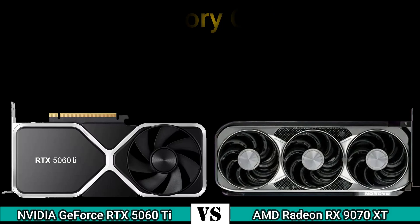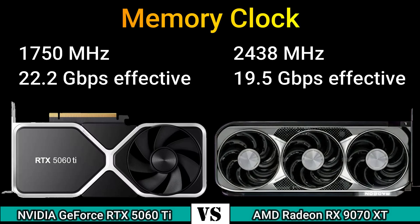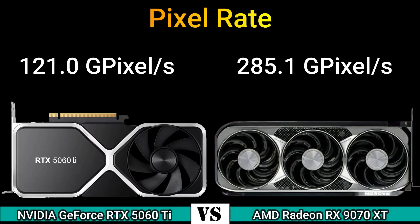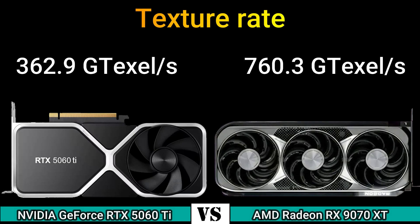Memory clock: 1750 MHz, 22.2 GB/s effective, and 2438 MHz, 19.5 GB/s effective. Pixel rate: 121.0 gigapixels/s and 285.1 gigapixels/s. Texture rate: 362.9 GT/s and 760.3 GT/s.